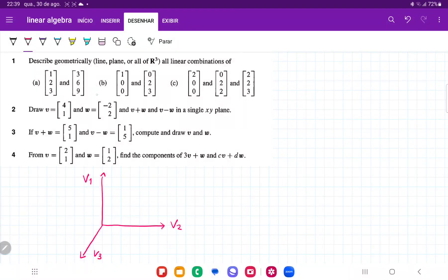So for number one, they want us to describe geometrically all linear combinations of these vectors. Now let's think about accessing 3D space. To access 3D space, I need three vectors all pointing in completely different directions. In this case, V1, V2, and V3 are all 90 degrees to each other. So because they all point in different directions, I can access any point in space.